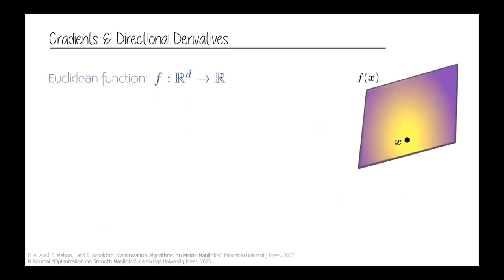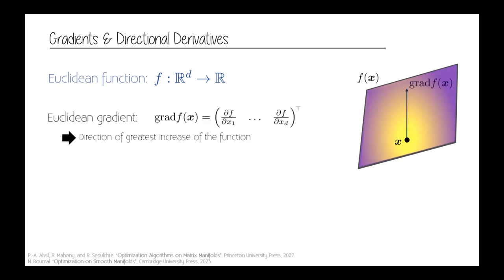To remind you quickly: in Euclidean space, you have a function that goes from R^d — a high-dimensional Euclidean space — to a scalar. For example, a function in R^2, where at each point you have a value. The gradient is simply the vector of partial derivatives of your function, giving you the direction of greatest increase — the direction where the function changes fastest.